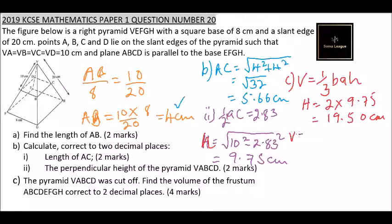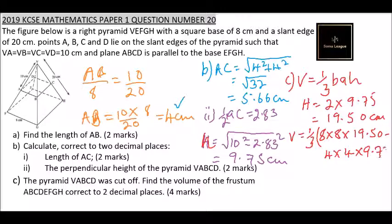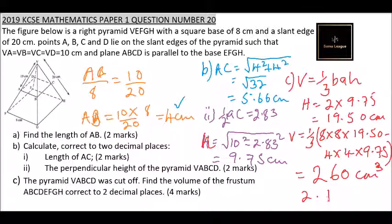The volume equals 8 times 8 times 19.50 minus 4 times 4 times 9.75, divided by 3 for each pyramid. Using your calculator to simplify, the final answer is 260 cubic centimeters, correct to two decimal places.